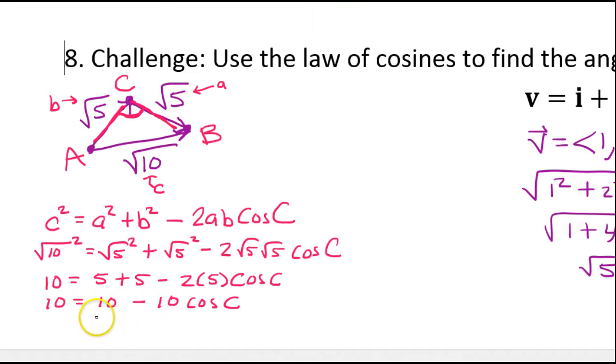Next, I would subtract 10 from both sides. Minus 10 minus 10. I'm going to subtract that from both sides. So that is going to give me 0 = -10 cos(c). I think I spoke too soon when I said this was not a right triangle.